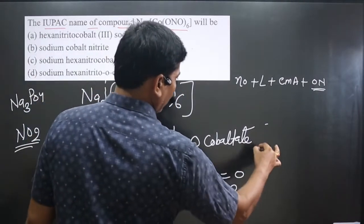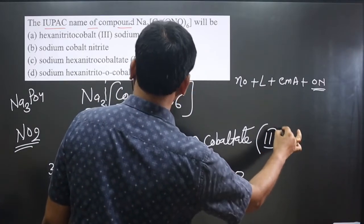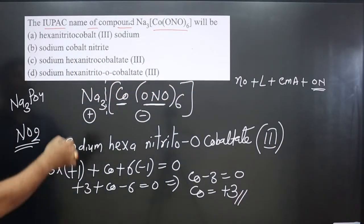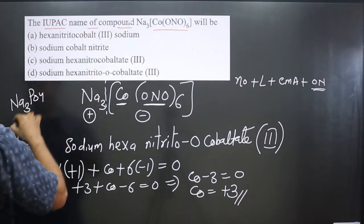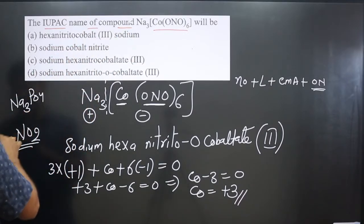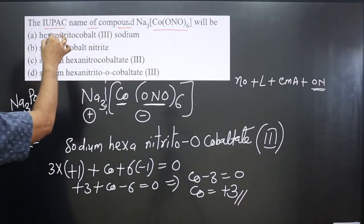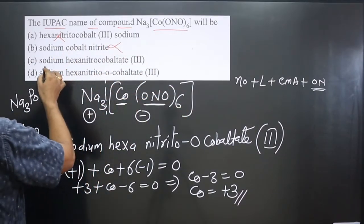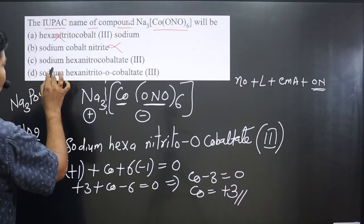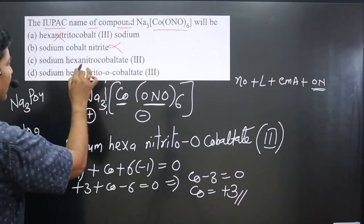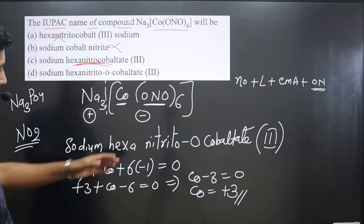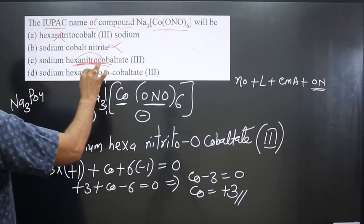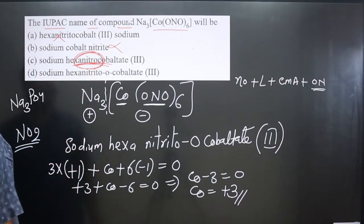Now we can match: hexa... no, sodium should be first when naming the anionic part. Option A is not correct - sodium cobalt nitrite - there is no order following. Option B: sodium hexa nitrite - which element is donating electron density to the central element?